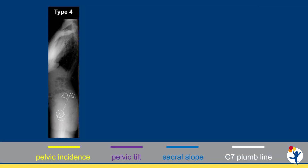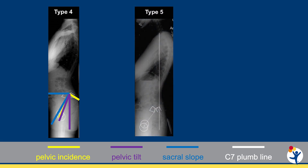The type 4 slip is a high-grade slip — greater than 50% slippage of L5 on S1 — with a high pelvic incidence. These patients maintain sacral pelvic balance and will have a high sacral slope and a low pelvic tilt. What differentiates a type 5 from a type 4 is sacral pelvic balance: in a type 5, the sacrum and pelvis are unbalanced, seen with a low sacral slope and a high pelvic tilt.